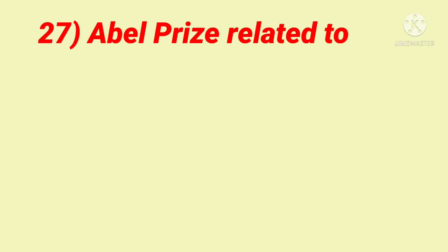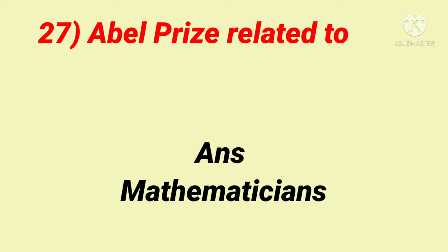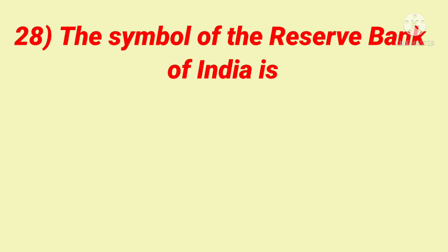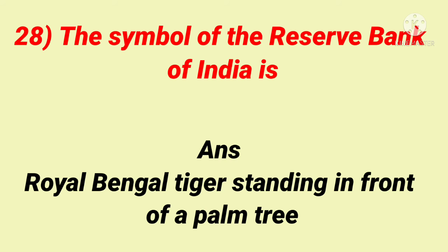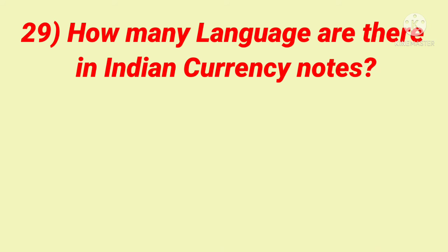The Abel Prize is related to... Answer: Mathematicians. The symbol of the Reserve Bank of India is... Answer: Royal Bengal Tiger standing in front of a palm tree. How many languages are there in Indian currency notes? Answer: 17 languages.